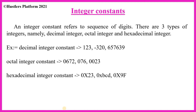The third type of integer constant is hexadecimal integer constant. It starts with 0x and consists of digits 0 to 9 and letters A to F. The x can be uppercase or lowercase. Examples: 0x23, 0xBCD, 0x9F — all are valid hexadecimal integer constants.